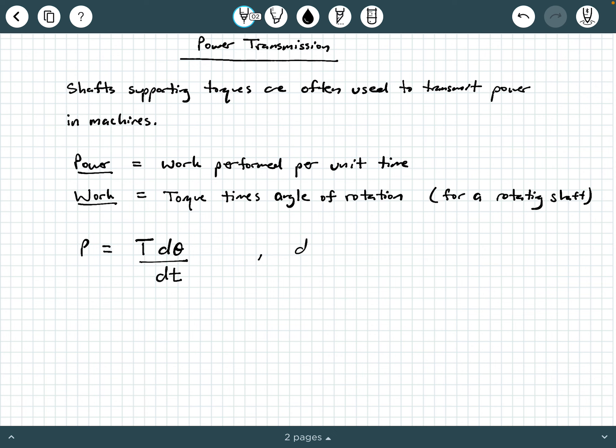And so we can say dθ is a differential rotation angle. Now, let's go a little bit more with this. Let's define angular velocity. What is angular velocity? Well, angular velocity